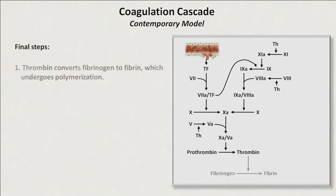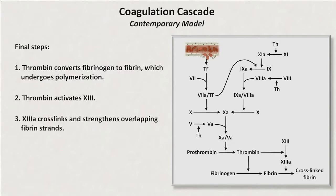In the final steps, thrombin converts fibrinogen, both that which is circulating and that which has been recently released by activated platelets, to fibrin. Soluble fibrin monomers spontaneously polymerize into relatively weak threads. Factor 13a, which is also activated by thrombin, then crosslinks and strengthens the overlapping fibrin strands. The cross-linked fibrin forms a three-dimensional mesh in which red blood cells and platelets become trapped.